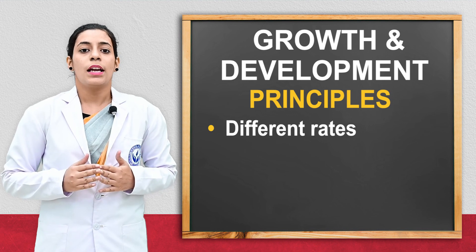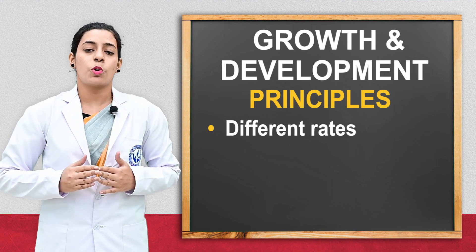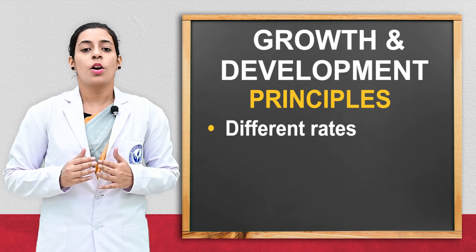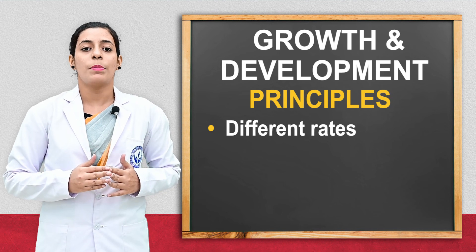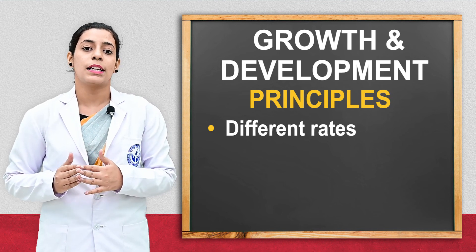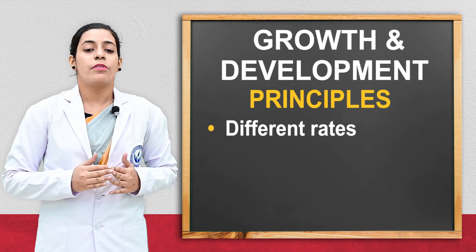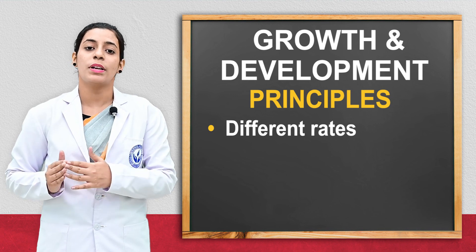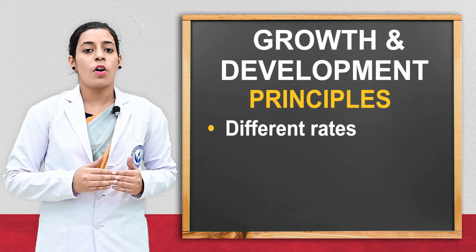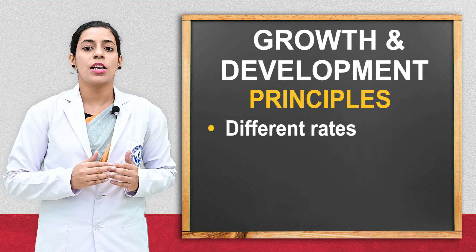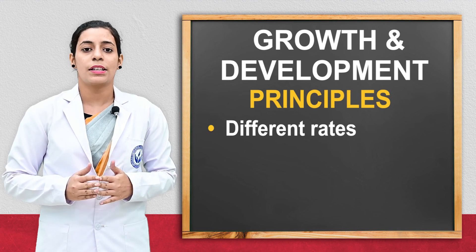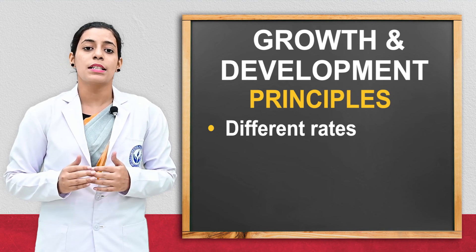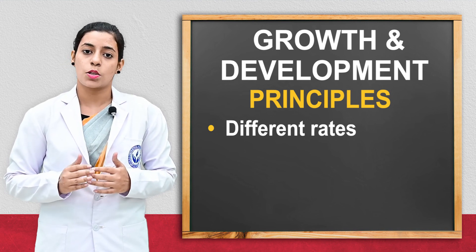The fourth principle is that growth and development proceeds at different rates. It means sometimes it is slow and sometimes it is rapid. For example, at the time of infancy it is rapid, while at older age the growth and development is very slow.